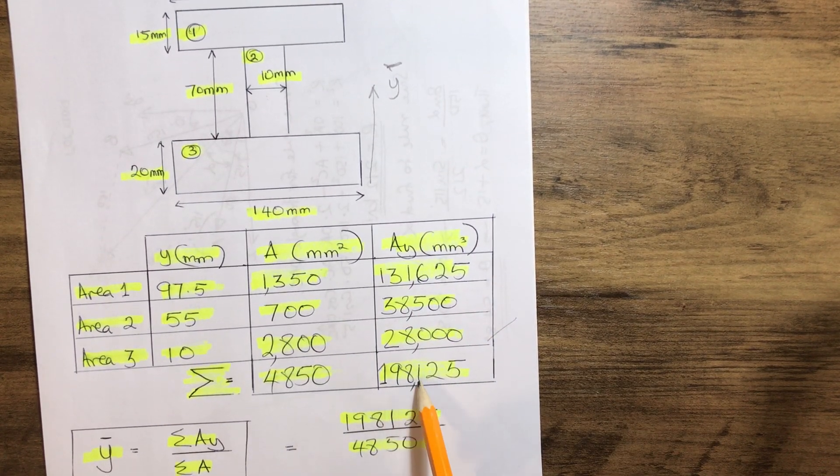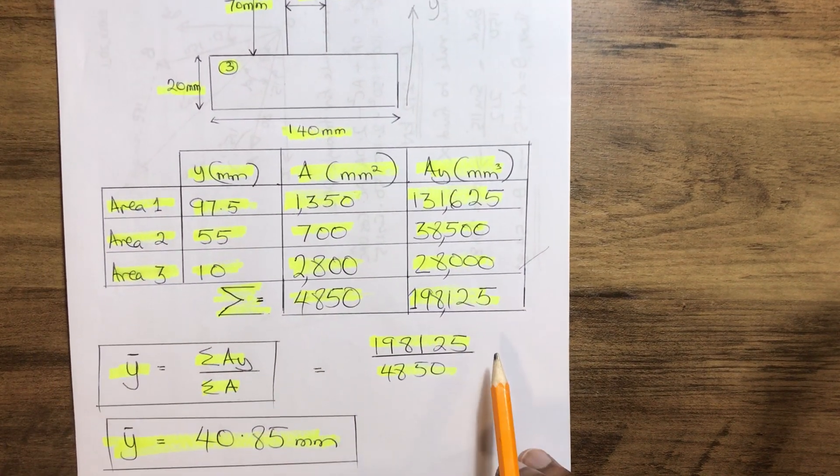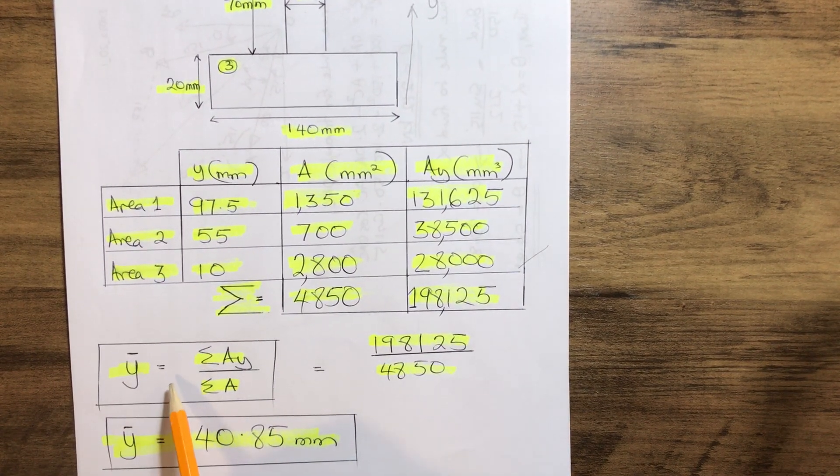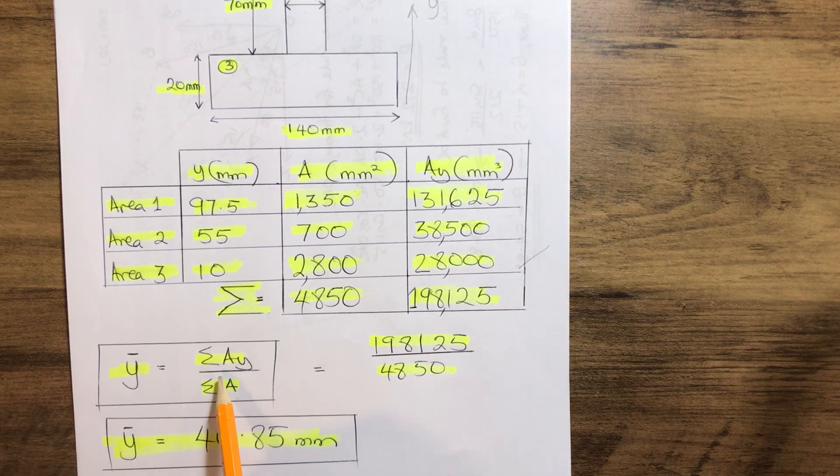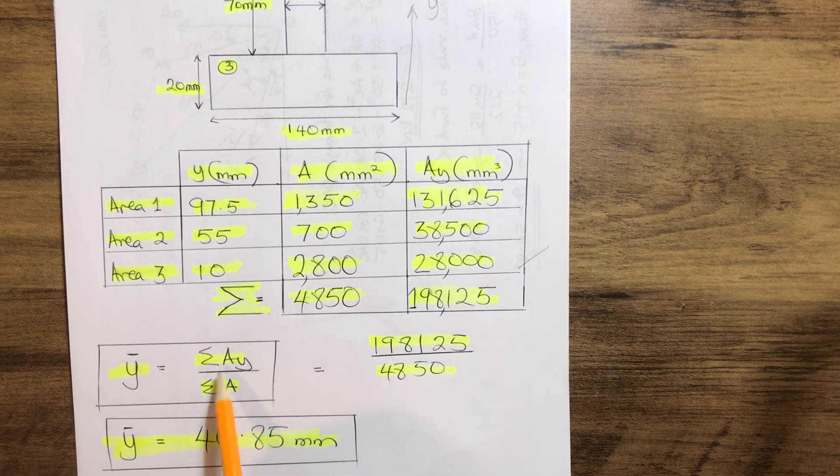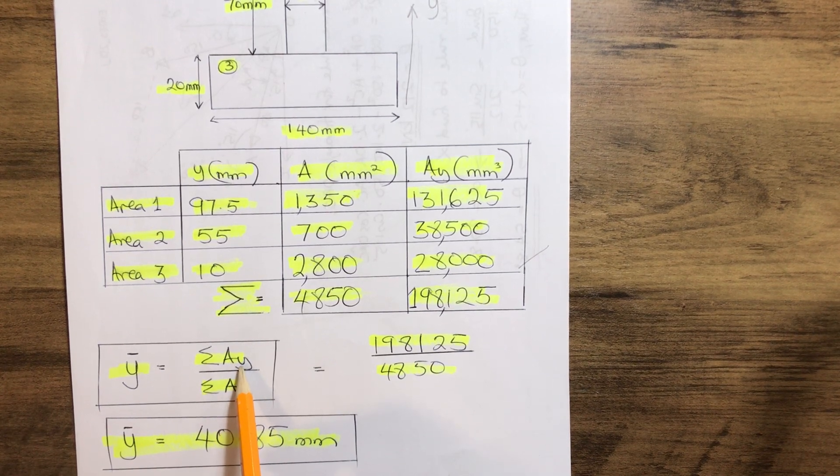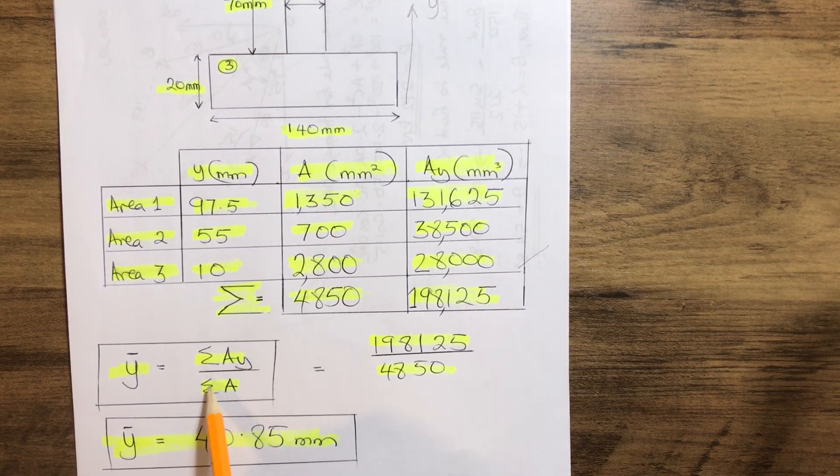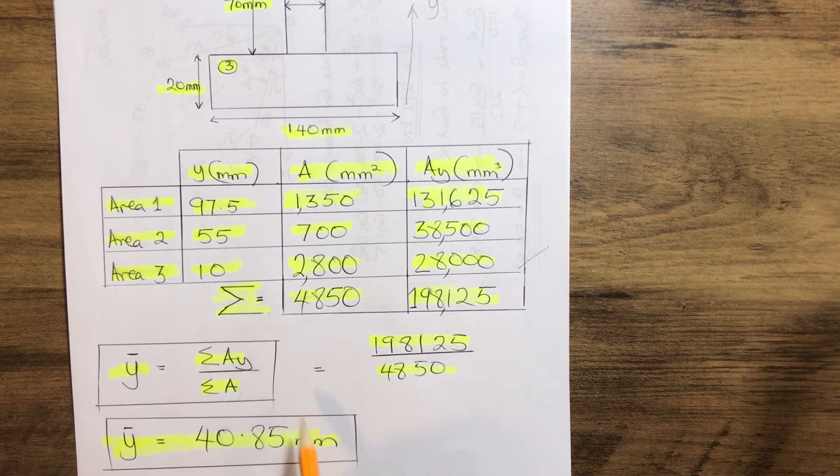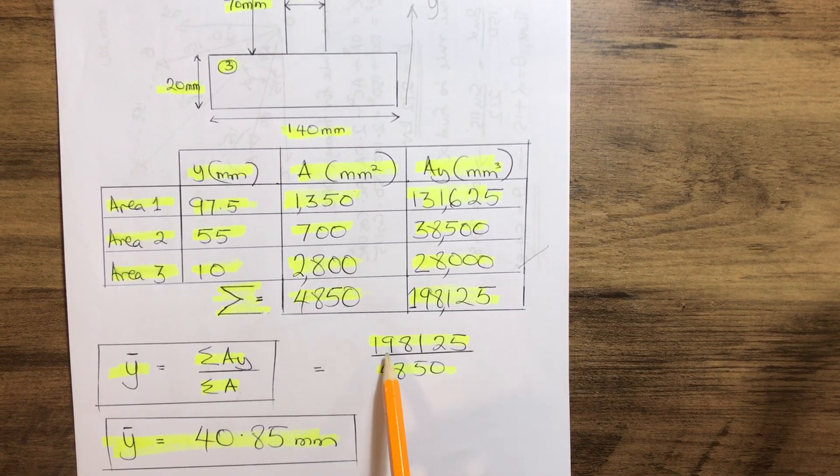So in order for us to calculate our Y-bar, our Y-bar formula equals summation of AY (that is the summation of the product of area of the cross-section and the Y in millimeters) over the summation of the area. So that gives us 198,125 over 4850.